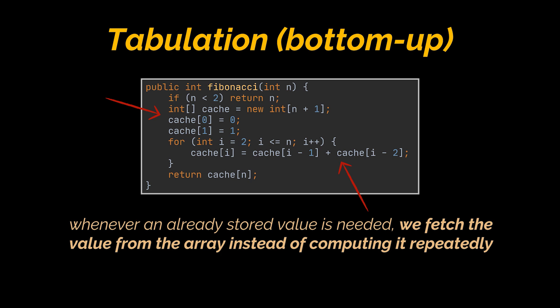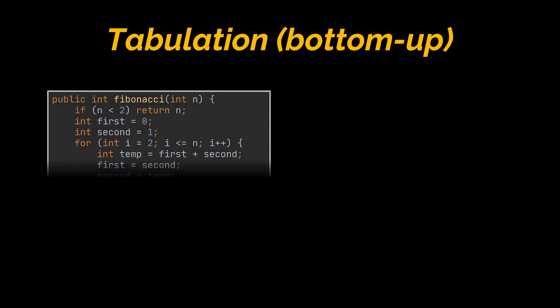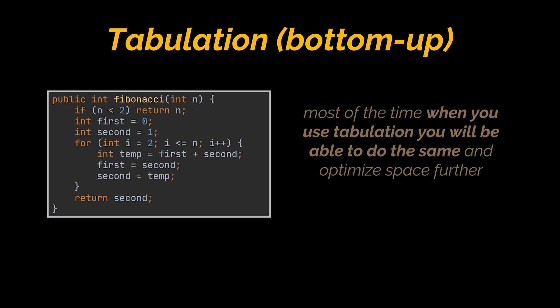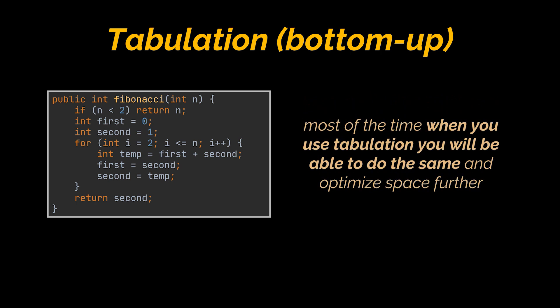Whenever an already stored value is needed, we fetch the value from the array instead of computing it repeatedly. Here we can do even better and save space: instead of using an array, we can use two variables, since we only require the nth term in each iteration. Most of the time when you use tabulation, you'll be able to optimize space further.